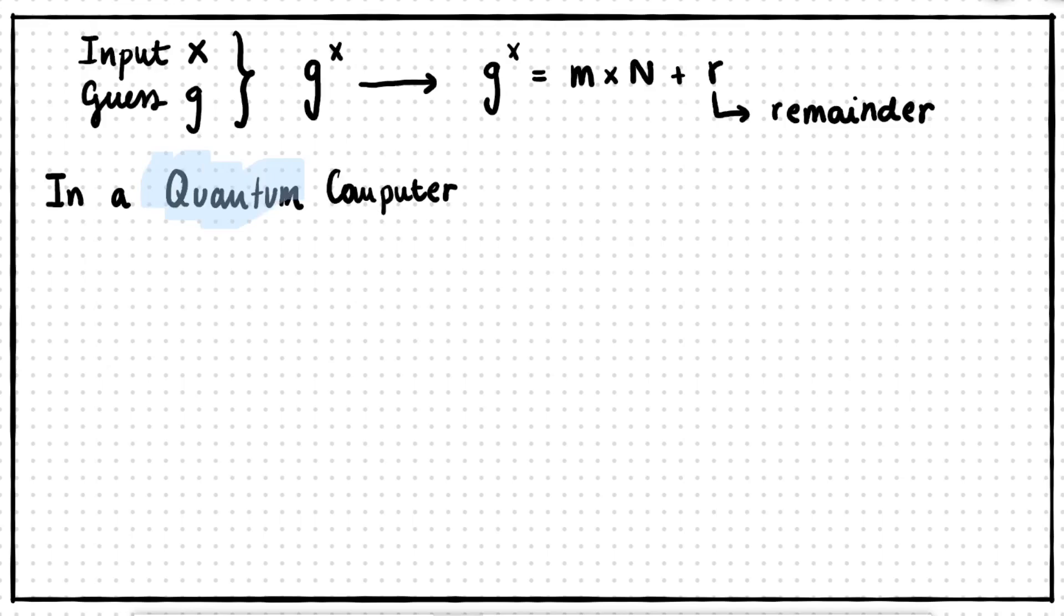In our quantum computer, we send a superposition of numbers and this will apply the operations described previously. Thus, we end up getting a superposition of the different numbers, possible p's, and their remainders, how much each of those powers are more than a multiple of n.